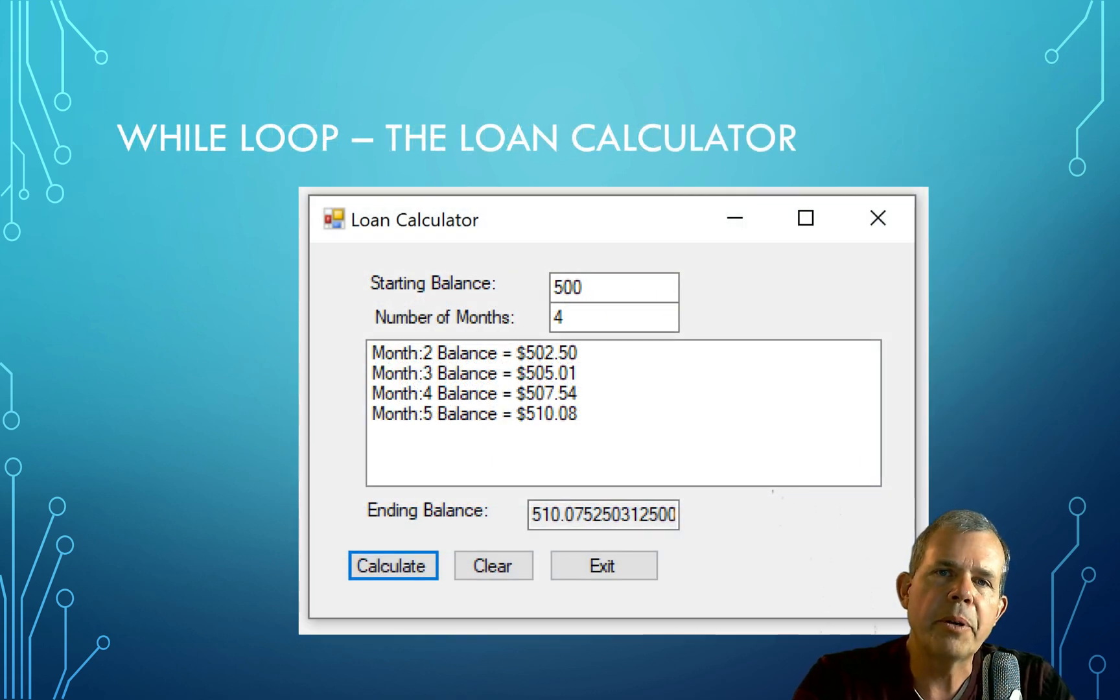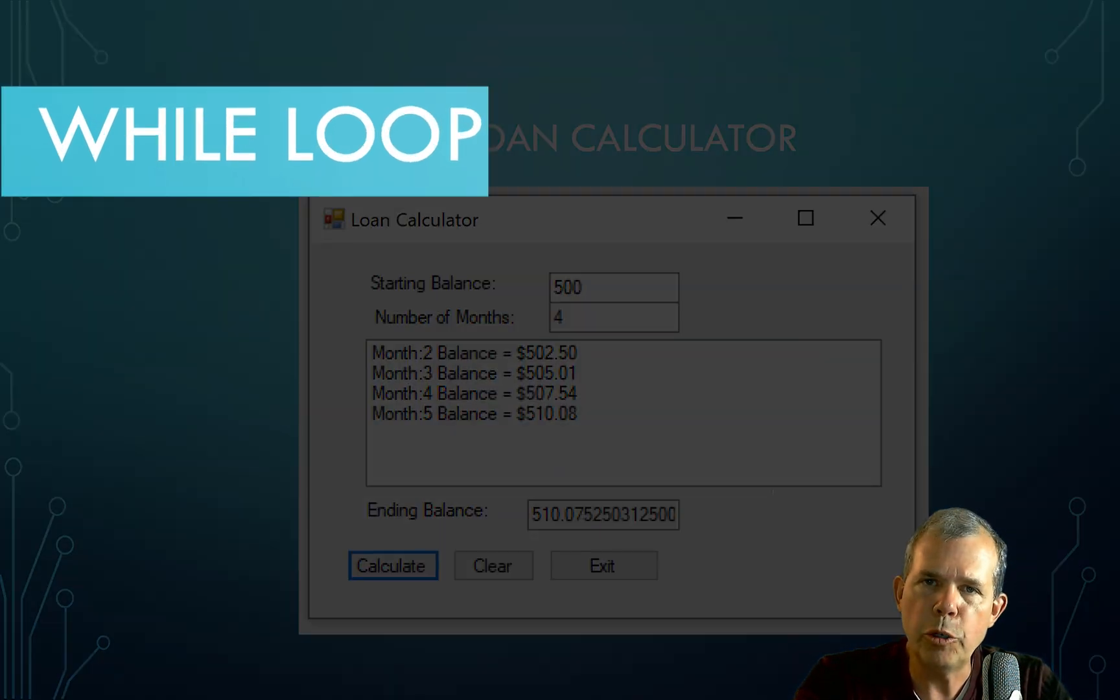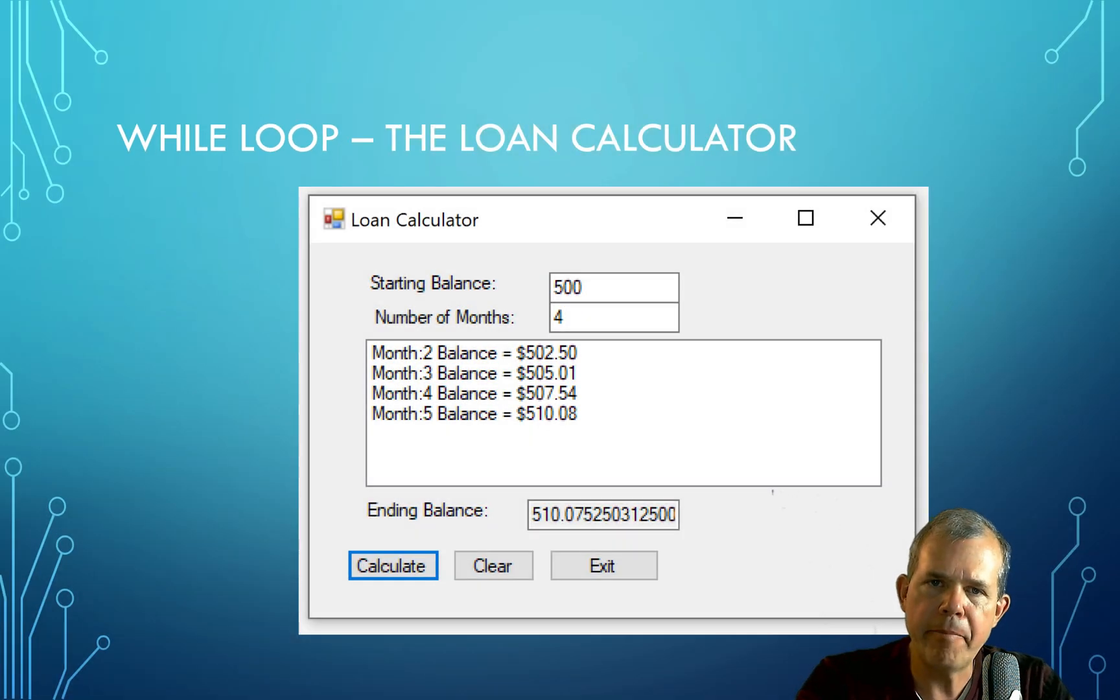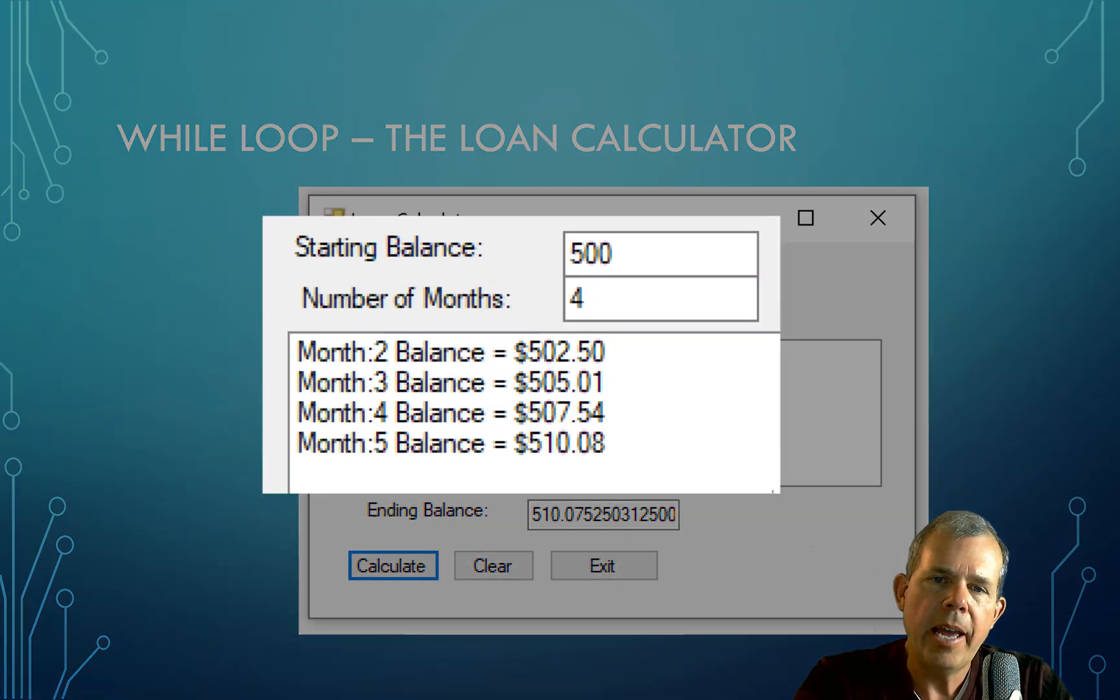In the next application that we're going to make, it's called the Loan Calculator. We're going to add a while loop. Now, a while loop allows you to calculate something in a repetitive manner. And so you can see in this app, we're going to have a loan for $500.